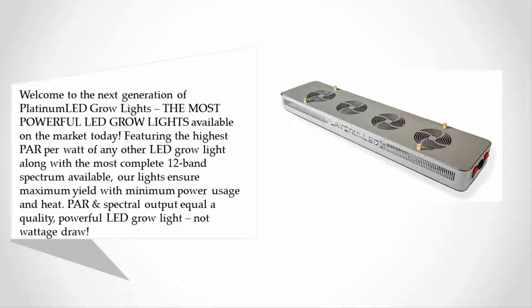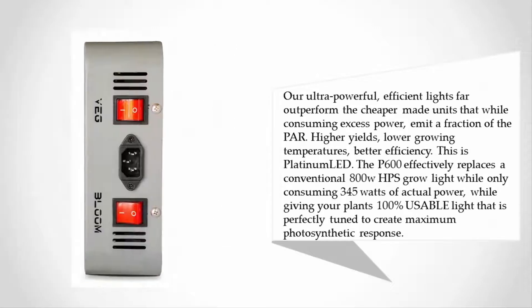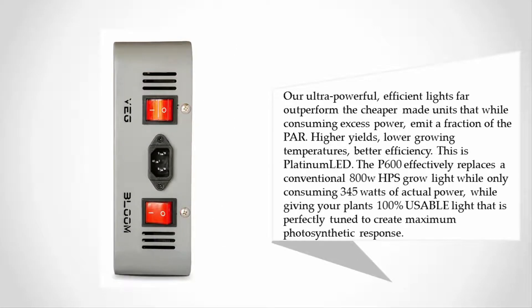PAR and spectral output equal a quality powerful LED grow light. Our ultra powerful efficient lights far outperform the cheaper made units that consume excess power but emit a fraction of the PAR. Higher yields, lower growing temperatures, better efficiency - this is Platinum LED. The P600 effectively replaces a conventional 800W HPS grow light while only consuming 345 watts of actual power.